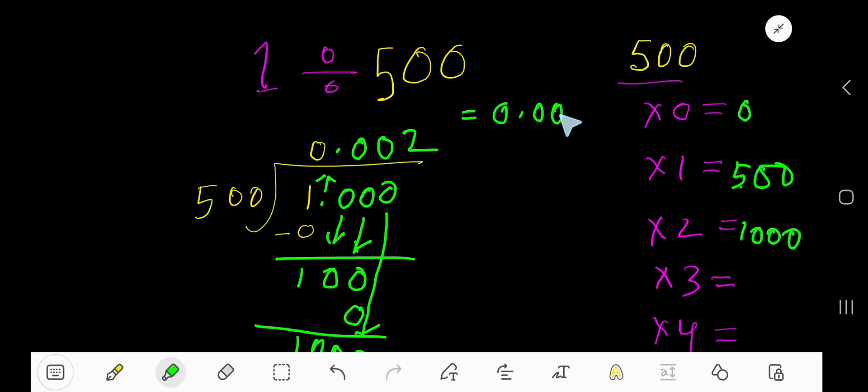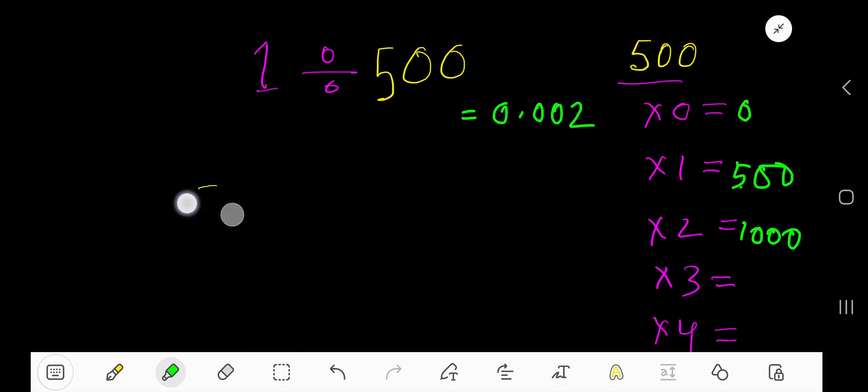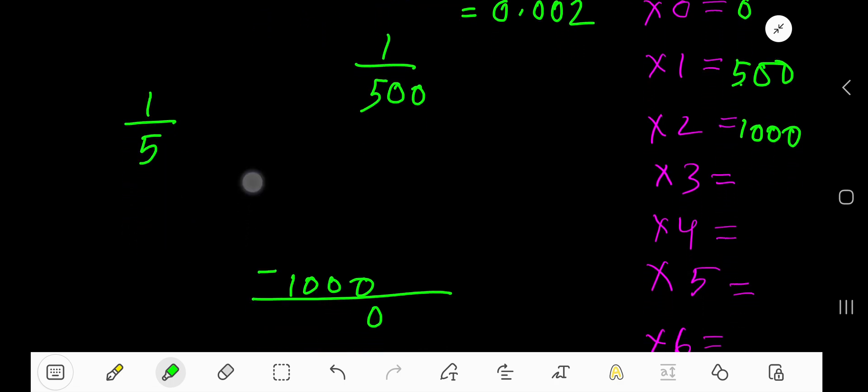I'm going to show you another method so you can do it easily. This is our problem: 1 divided by 500. Forget about these two zeros, just think about 1 over 5.